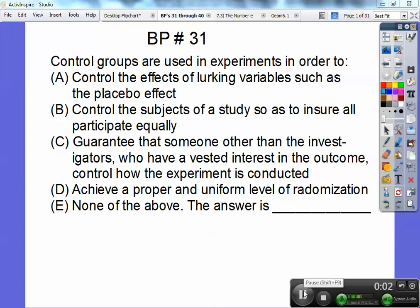Hey folks, this is Mr. Bullock and here's some more multiple choice questions for the AP test. Control groups are used in experiments in order to control the effects of lurking variables such as the placebo effect. So control groups help you control the lurking variable. So it's answer A.